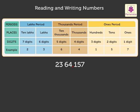Next, a comma is inserted between the fifth and the sixth digit, that is, where the thousands period ends and the lakh period starts.